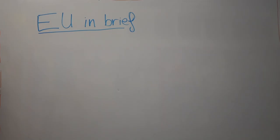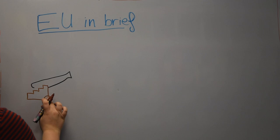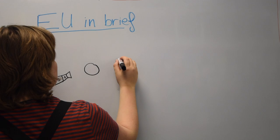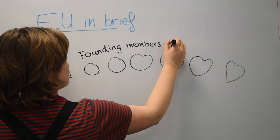So let's start with the EU in brief. A few years after the war in 1950, the European Union was set up with the aim of ending the frequent and bloody wars between neighbours.